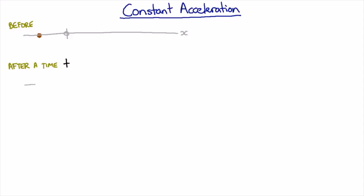So after a time t, it's going to be somewhere else. In order to figure out how it's going from one to the other, we need to know its acceleration and we also need to know its velocity.